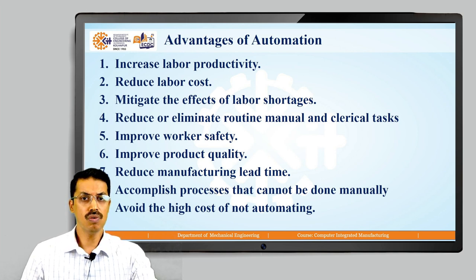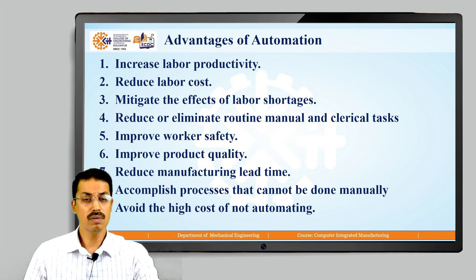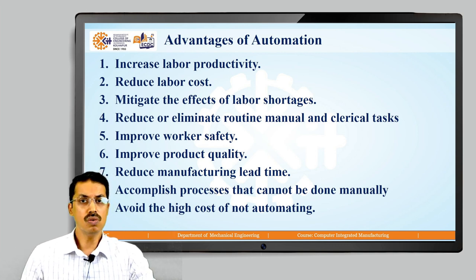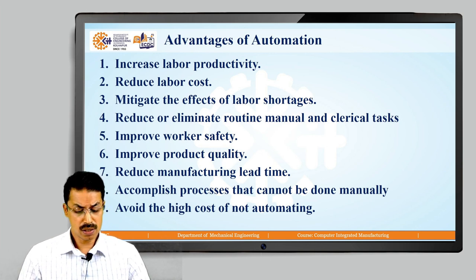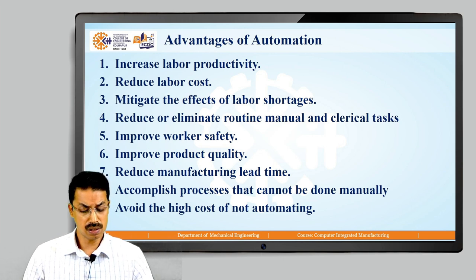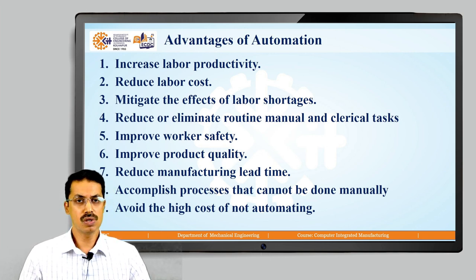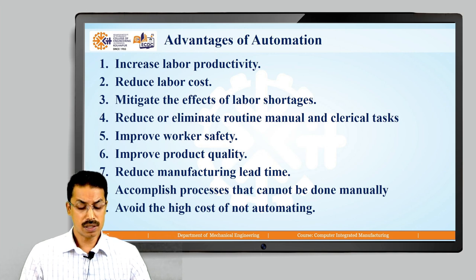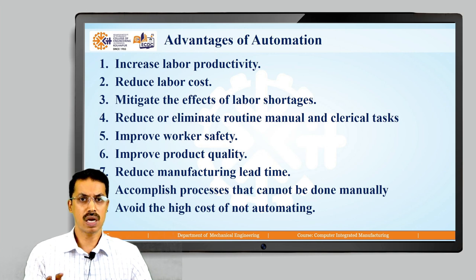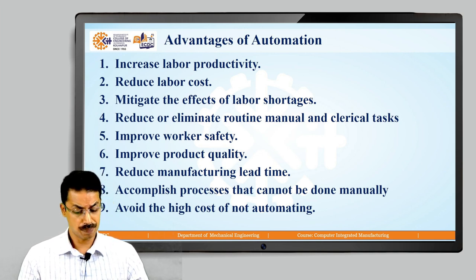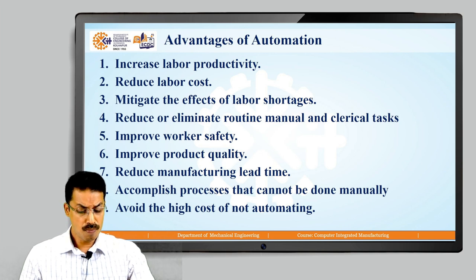Next is improved worker safety. Automation improves worker safety by transferring the worker from active participation in a process to a monitoring role, or removing the worker from the operation altogether. In hazardous conditions where it is risky for a worker to operate, we replace that worker with machines and give them only a monitoring role.